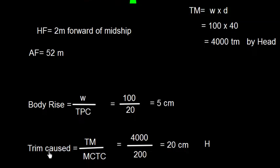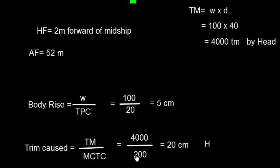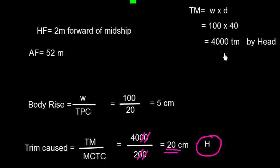The trim change (Tc) is calculated as trimming moment divided by MCTC, where MCTC is the moment to change trim by one centimeter. With a trimming moment of 4000 ton-meter and MCTC = 200, the total trim change is 20 centimeters. This is by head because the trimming moment is also by head.